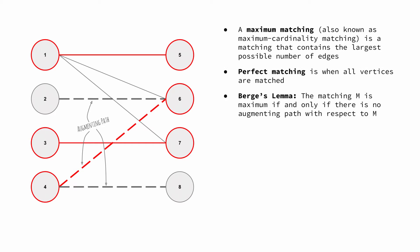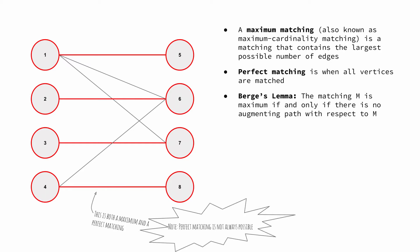A maximum matching is when the largest possible number of vertices have been matched. A perfect matching is when all of the vertices have been matched and therefore is a maximum match.